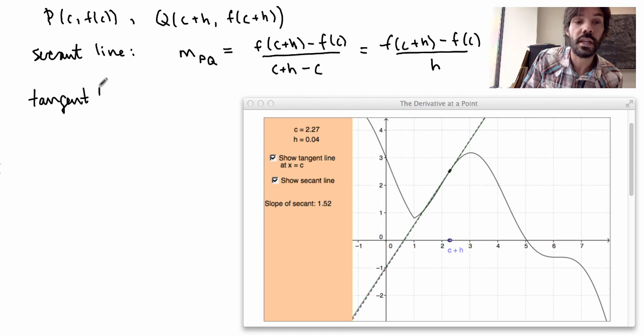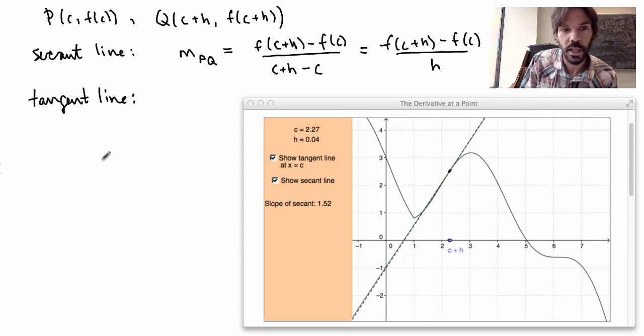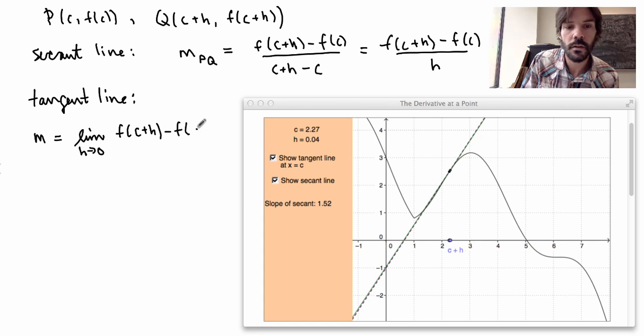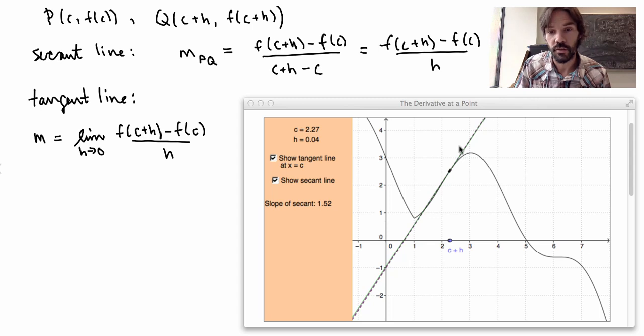So mathematically what does that mean? Well, what I'm doing here, the tangent line here I can define as being the line that goes through the point P and has slope—I'm gonna write it as just m here. It has the slope given by the same expression, but where I'm sending the point c plus h very close to c. So in other words, I'm taking the limit as h goes to 0 of the slope of the secant line.